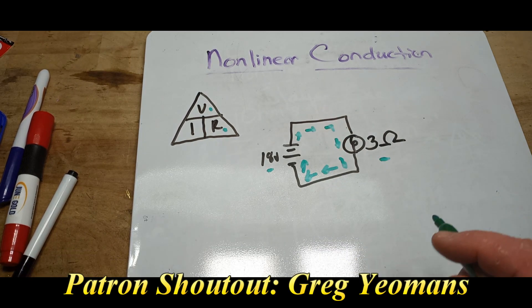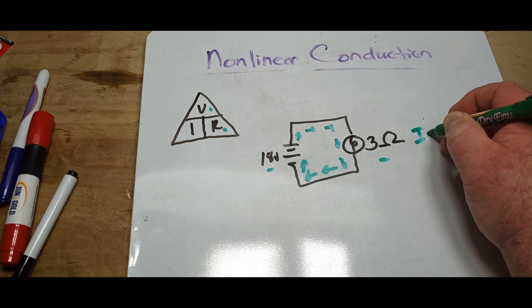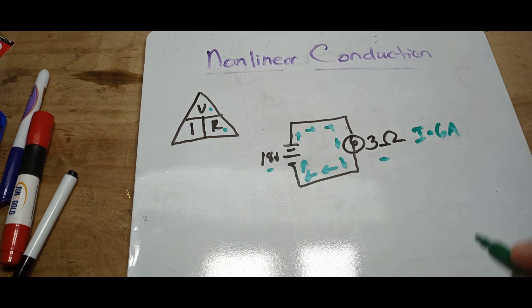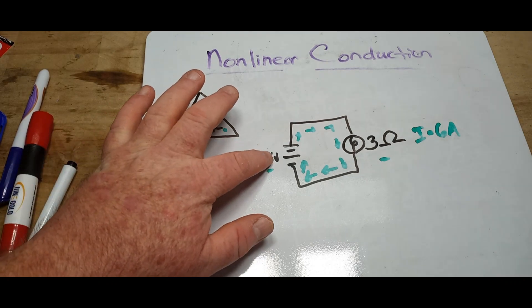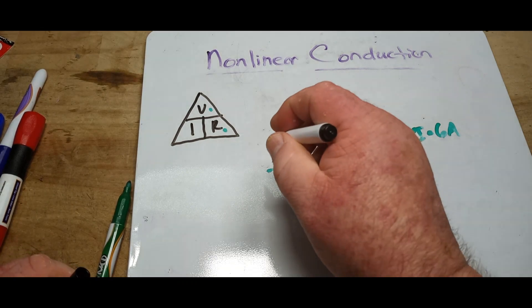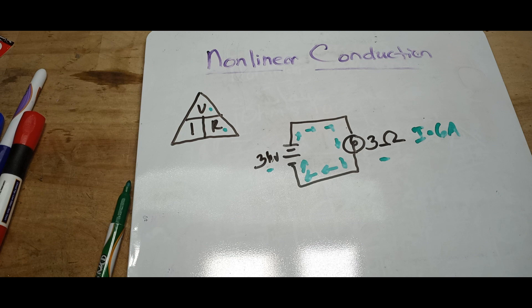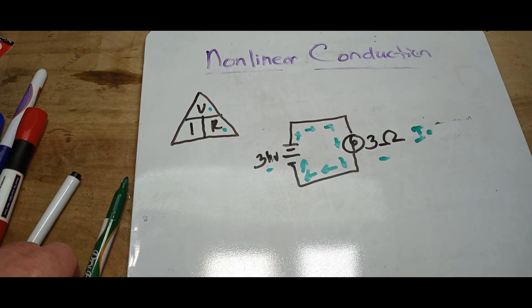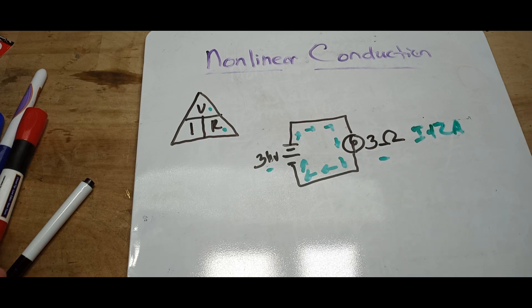And our answer in this particular case is current equals 6 amps. So what if we change our battery voltage to 36 volts? Well in that case our current would be 12 amps. That's linear conduction, are you with me so far? Good.